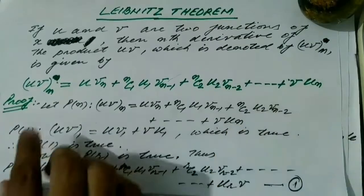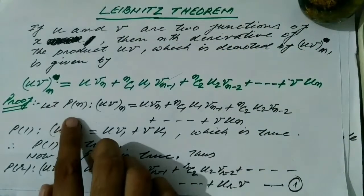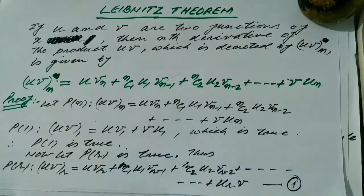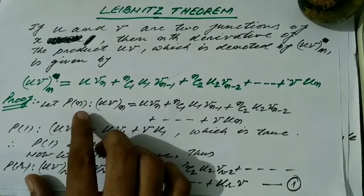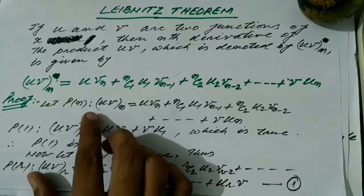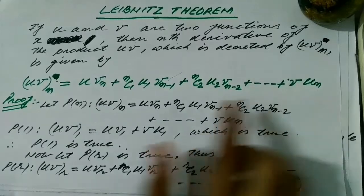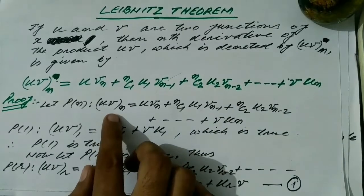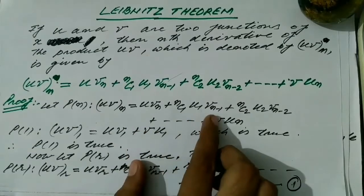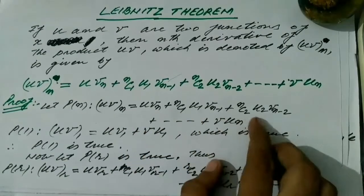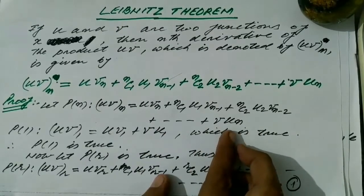Now we are going to prove it. We assume this expression as statement P(n), because we are going to prove this theorem by the mathematical induction principle. So P(n) states: (uv)_n = u·v_n + nC1·u1·v_{n-1} + nC2·u2·v_{n-2} + ... + u_n·v.